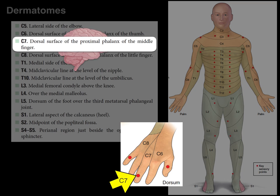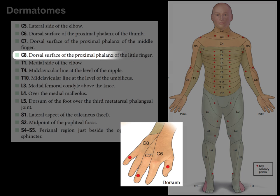The way to remember C7: if you test C7, you're not going to heaven — C7, no heaven, you shouldn't give people the bird. C8 is the dorsal surface of the proximal phalanx of the little finger. So basically, C6, C7, C8 is the back of the thumb, middle finger, and pinky.